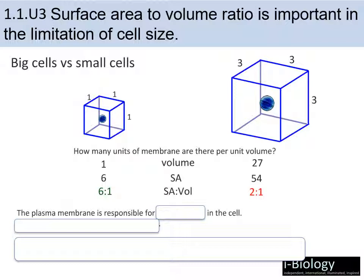This happens because as volume increases, it increases much faster than surface area. Volume is calculated as a three-dimensional value, so there's an exponential increase as length, width, and height all increase. Surface area does increase as well, but less so because we're only looking at length times width times number of sides. Since surface area doesn't increase as quickly as volume, the ratio gets smaller and smaller.